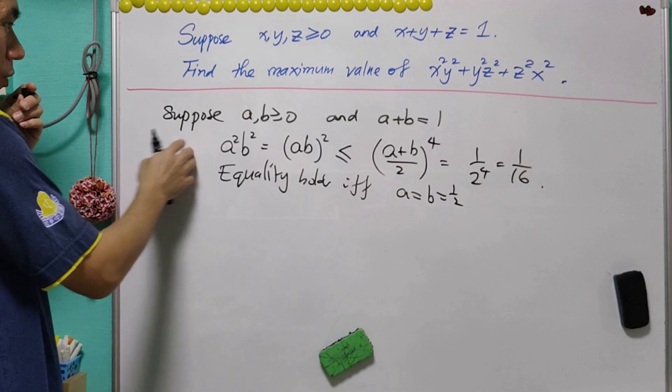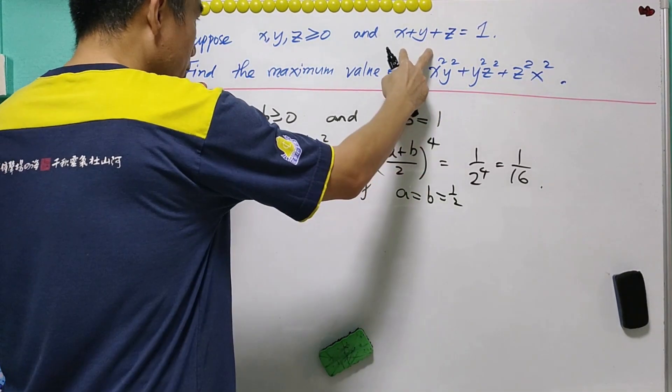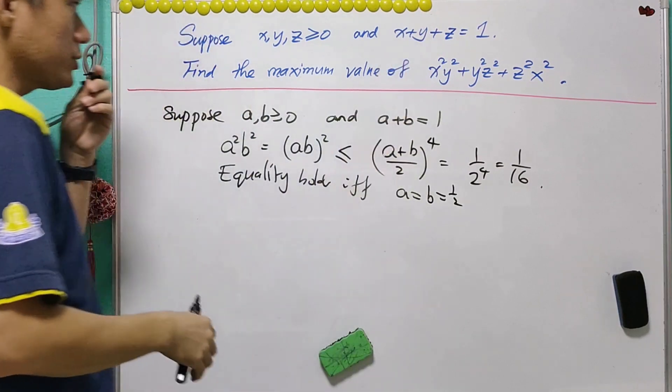This is a case where we have only two terms. Now we move to our original question where we have three terms, x, y, and z.